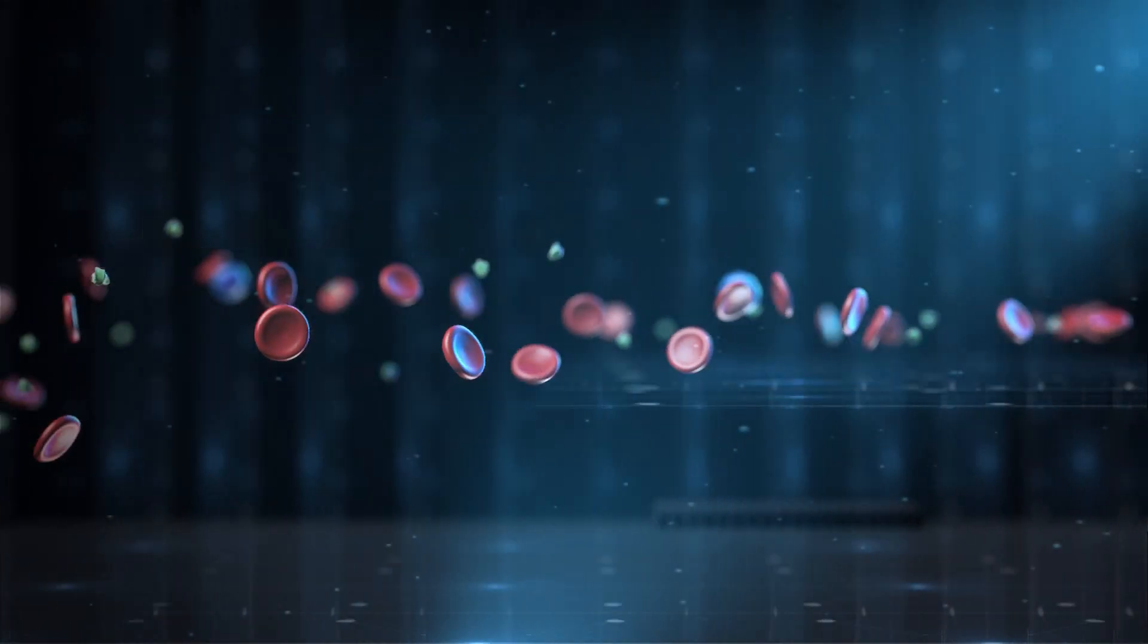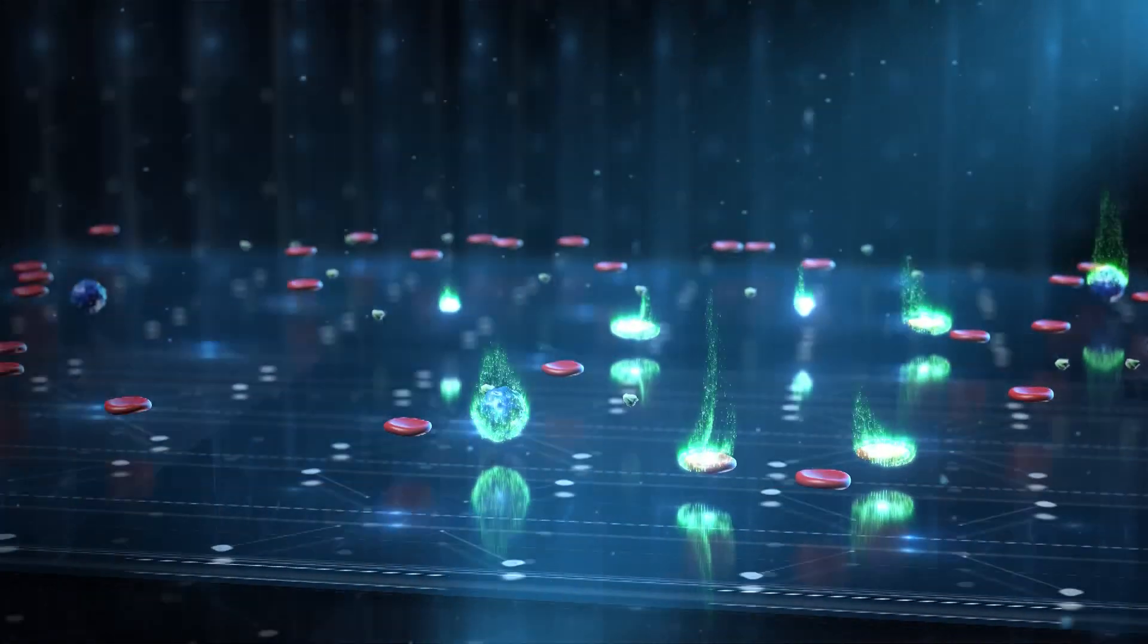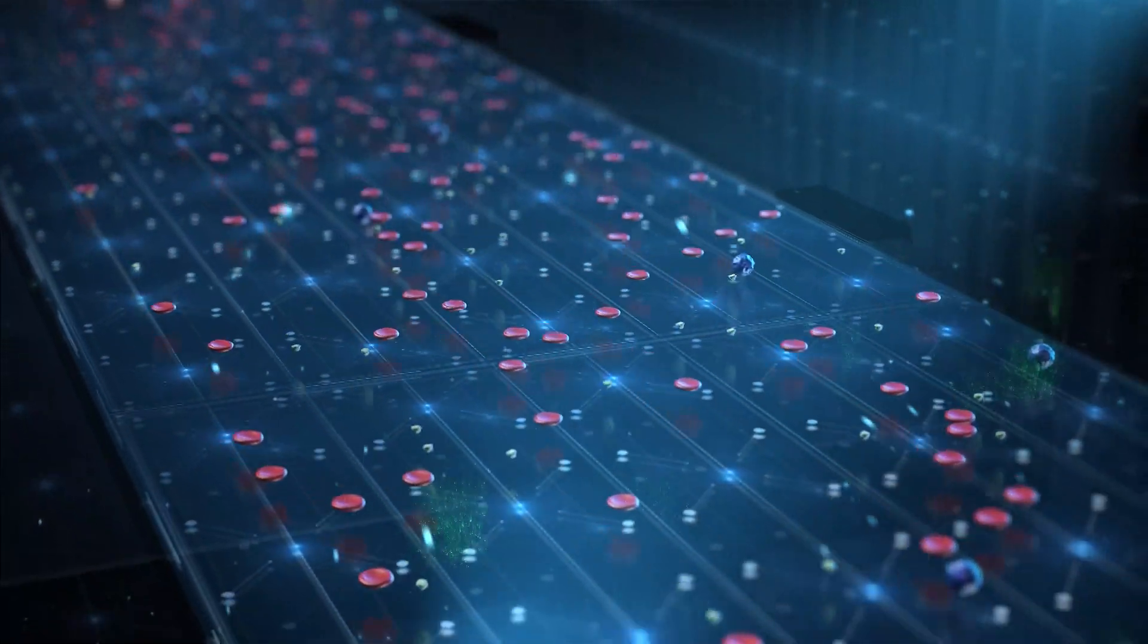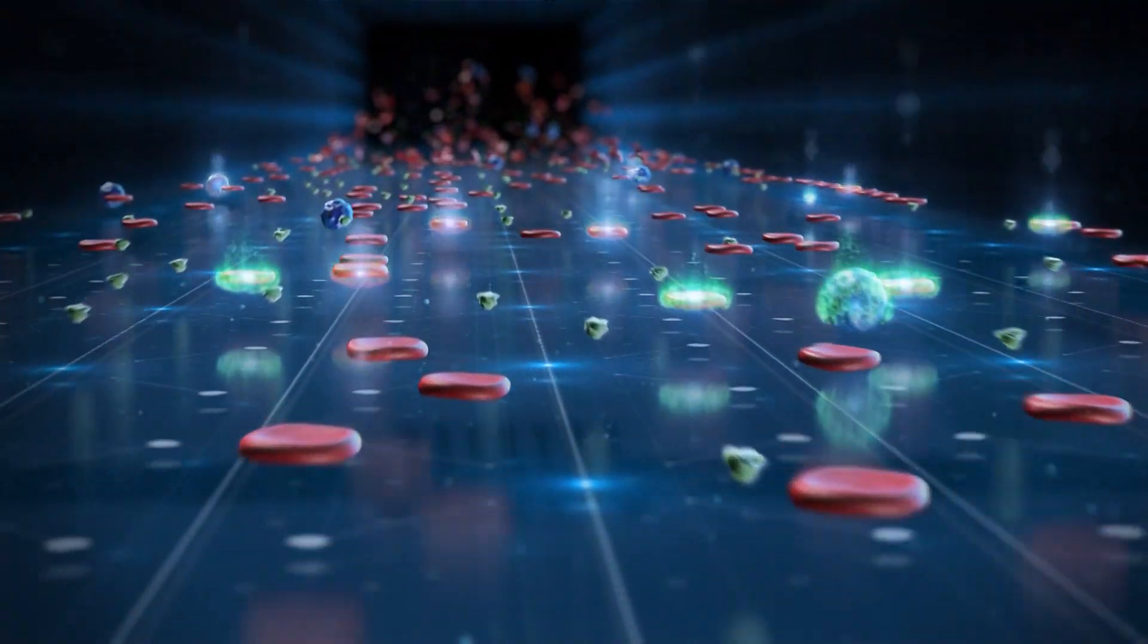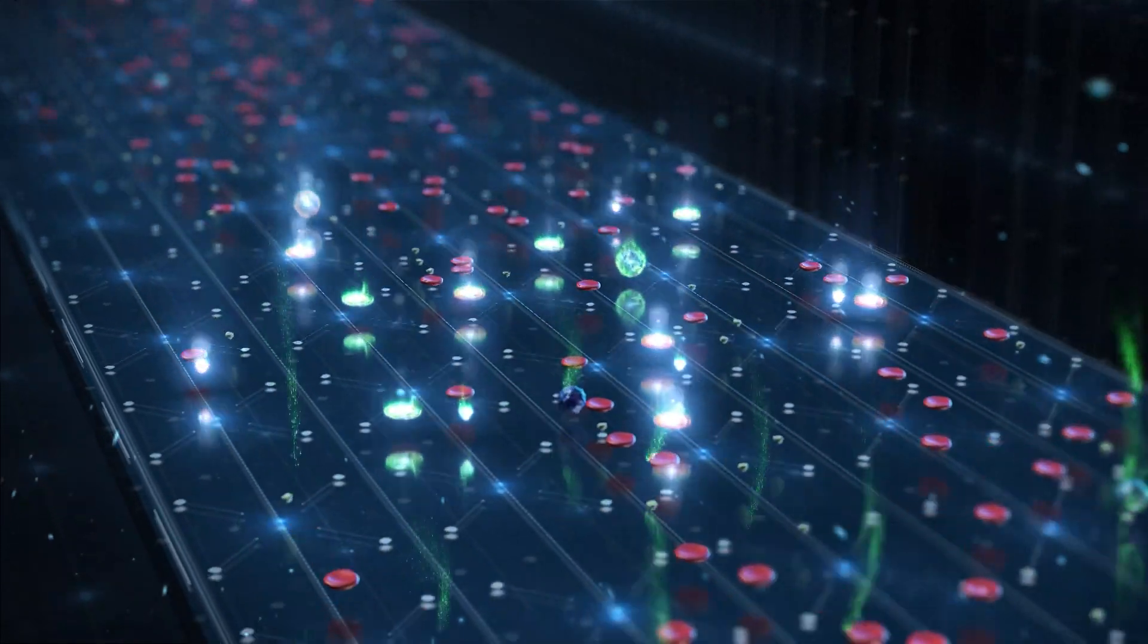The blood flows through a micro channel while cells focus at the center and form a single layer plane. Images of the focused cells are analyzed using cutting edge machine vision algorithms. Cells are differentiated based on their morphologies and staining properties.